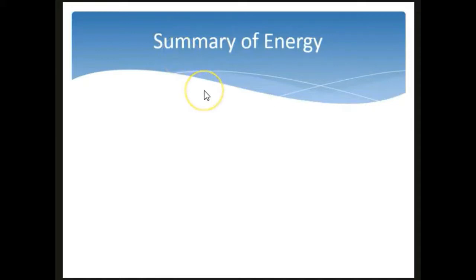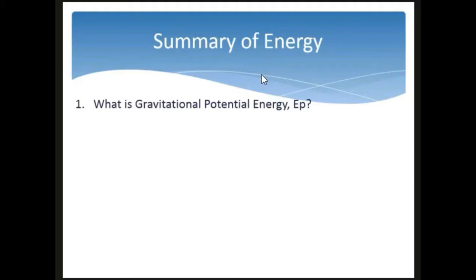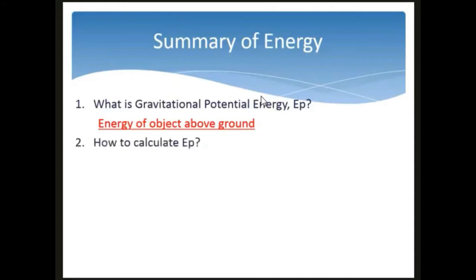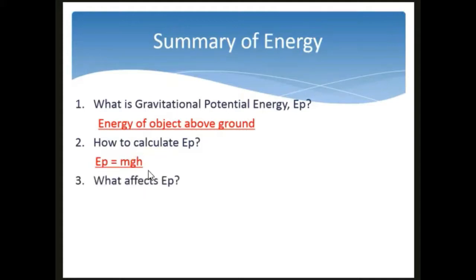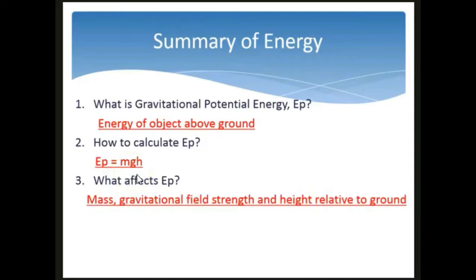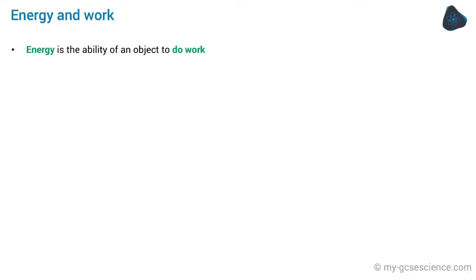In summary: gravitational potential energy (symbol Ep) is the energy of an object above ground. Calculate it using Ep = mgh, where M is mass in kilograms, G is gravitational field strength, and H is height above ground in meters. Three things affect GPE: mass, gravitational field strength, and height of the object above ground.